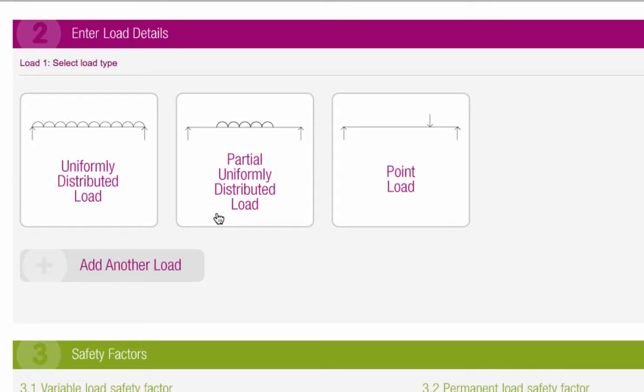A partial uniformly distributed load is where the load is evenly distributed across part of the beam. And a point load is where there are localised loads at certain points along the beam, such as when a steel beam is required to support another steel beam.